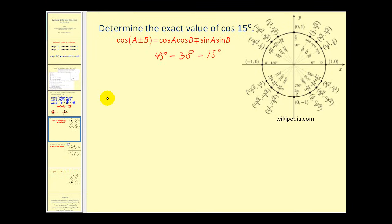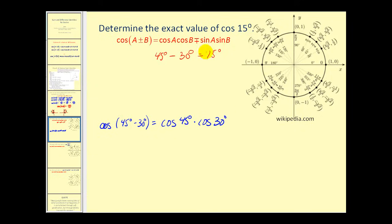Let's set this up: the cosine of 45 degrees minus 30 degrees equals cosine a cosine b, which is cosine 45 degrees times cosine 30 degrees. Since we use the subtraction sign here, we use an addition sign on the right. Then it's plus sine a times sine b, or sine 45 degrees times sine 30 degrees. Now we'll fill in these values, find the products, and then find the sum.